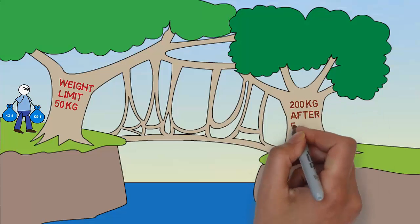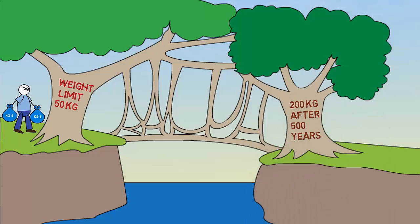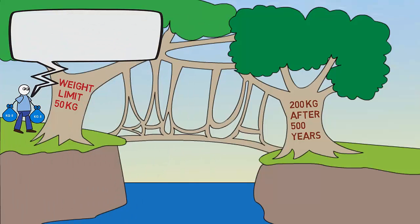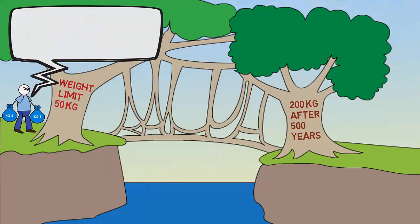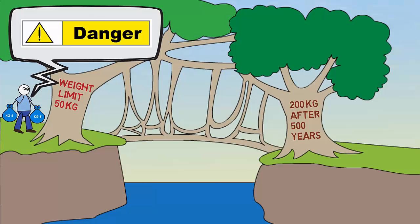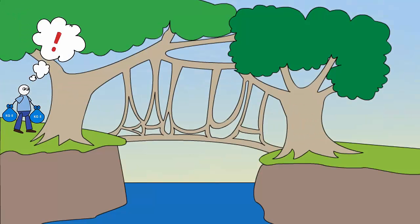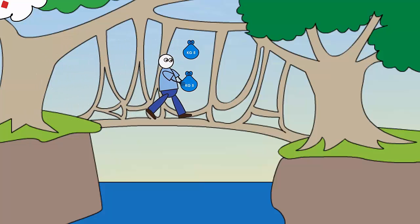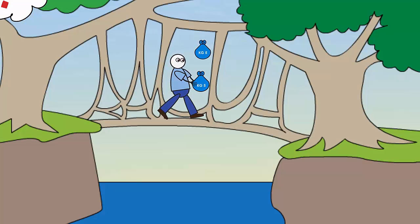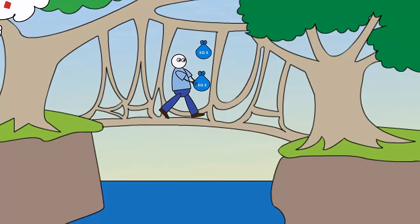So there he was, Gokul, weighing 45 kgs at the mouth of the bridge with two bags, 5 kg each. Surely he cannot carry the total weight of 55 kgs on a 50 kg weight limit bridge. Gokul was smart with numbers, and so he decided to juggle his way. That way, with only one bag in hand and one in air, he thought the total weight would be 50 kgs. Perfect!